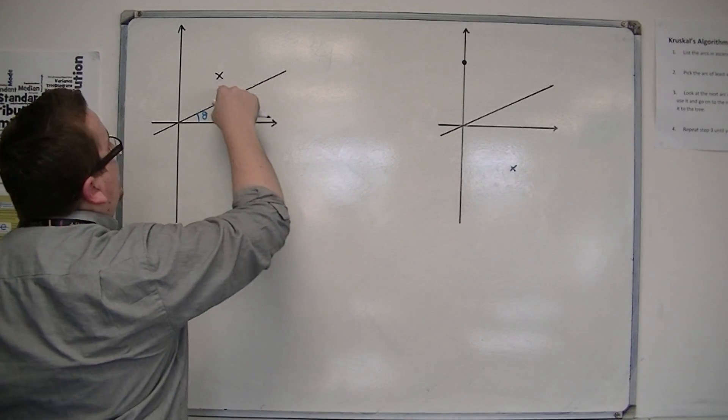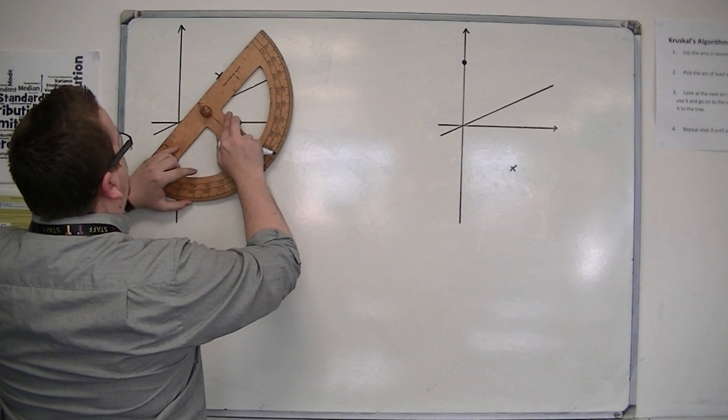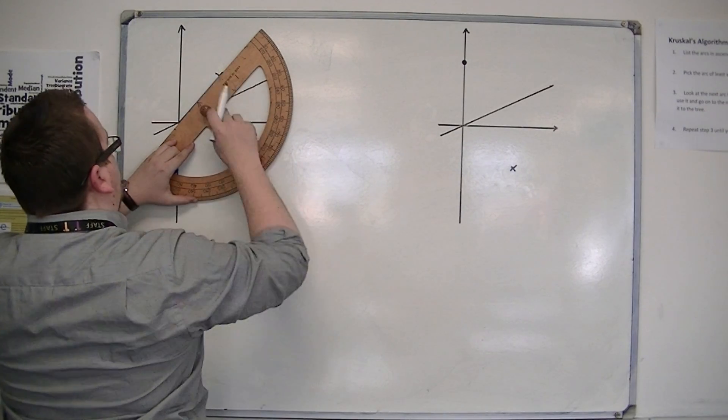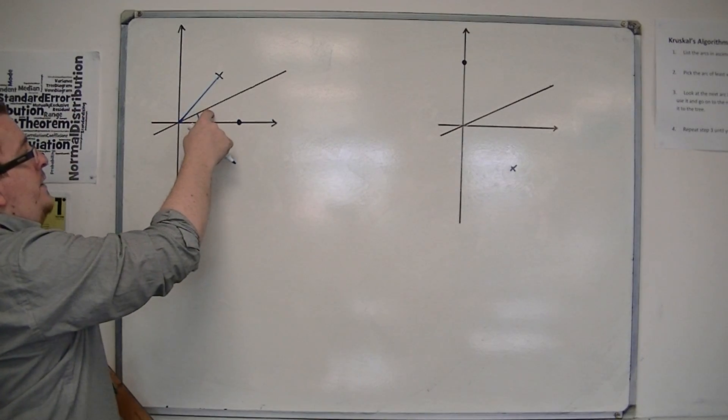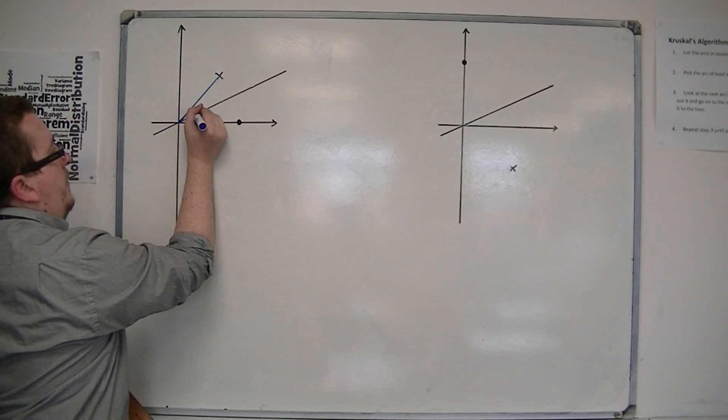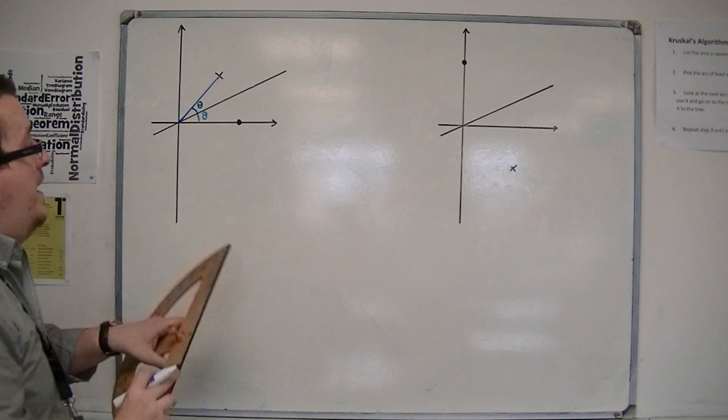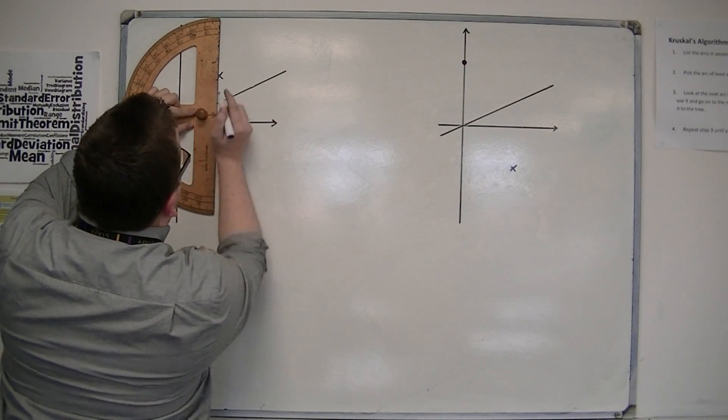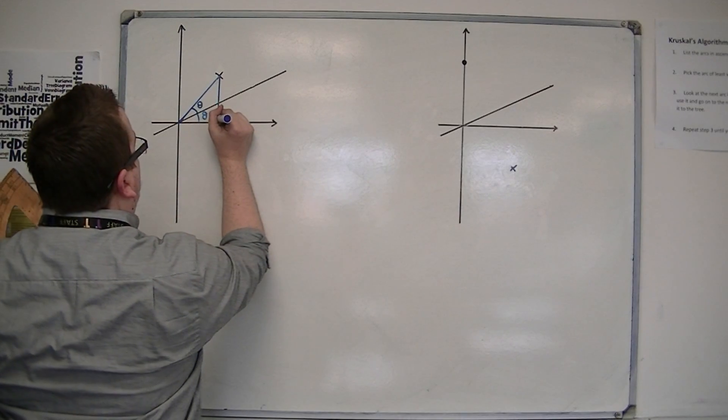If I now draw a line from the cross to the origin, then we should note that if that is angle theta, then this is also angle theta. And then I can create a right-angle triangle with the base on the x-axis.